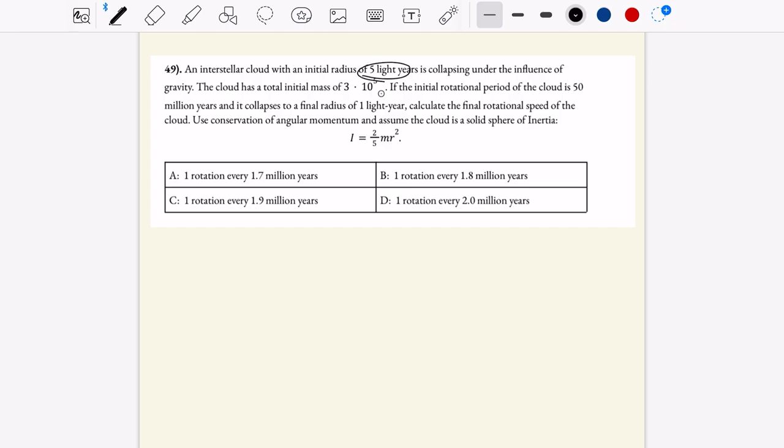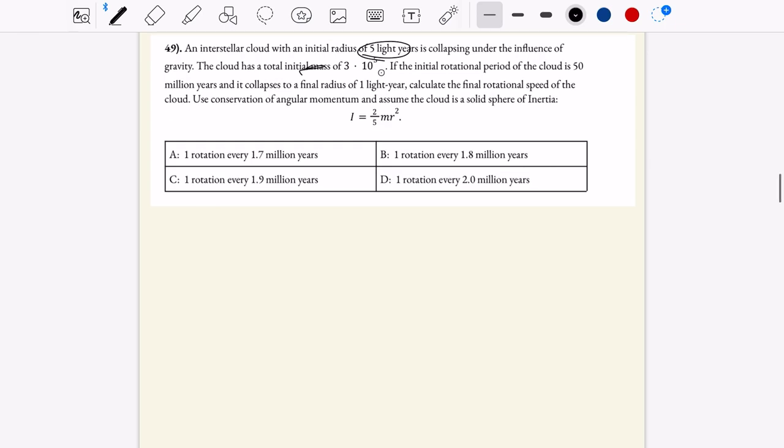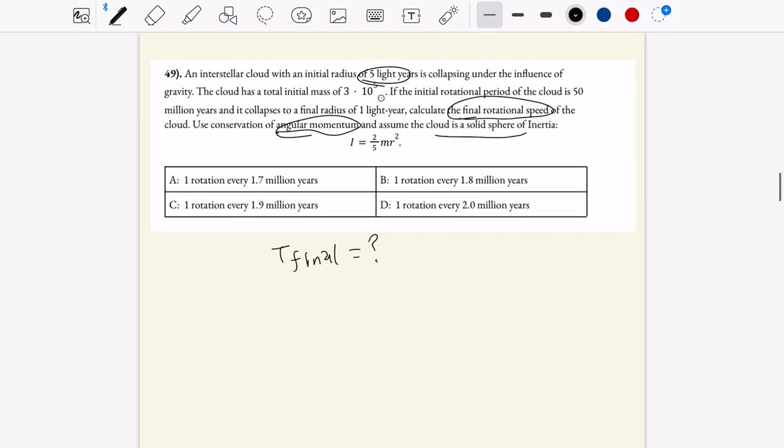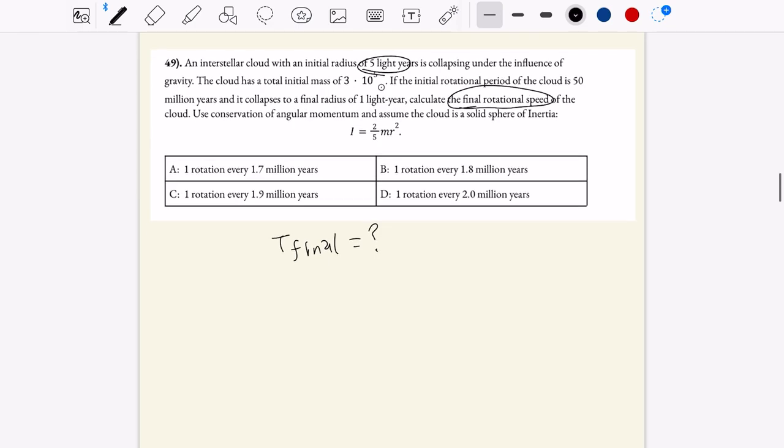So we have an interstellar cloud with an initial radius of five light years. Initial implies that there will be a final quantity we want to be concerning ourselves with, and so that's going to be a final radius of one light year. So the total cloud has this mass, and it is given the final rotational speed. That's what we want to find. So we can really quickly write, we want to find t final.